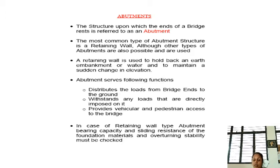An abutment will serve the following functions: it distributes the load from the bridge ends to the ground, withstands any loads that are directly imposed on it, and provides vehicular and pedestrian access to the bridge. In the case of a retaining wall type abutment, the bearing capacity, sliding resistance of the foundation materials, and the overturning stability must be checked.